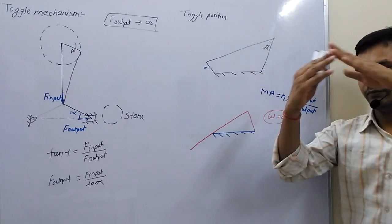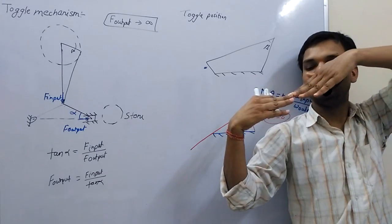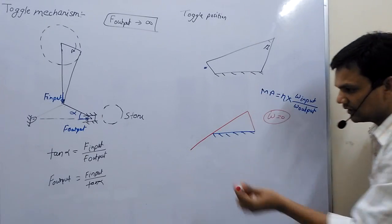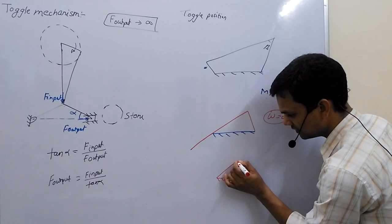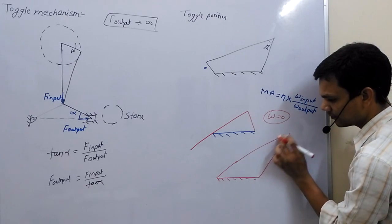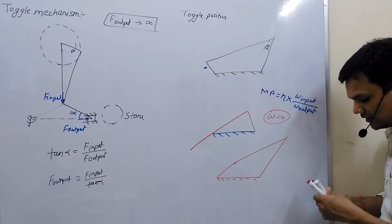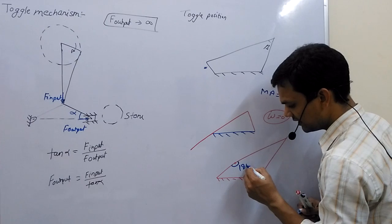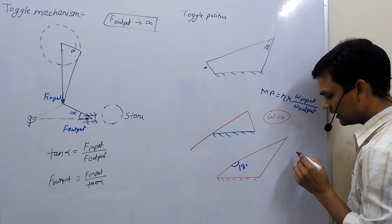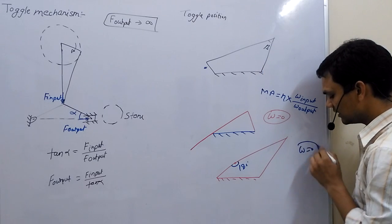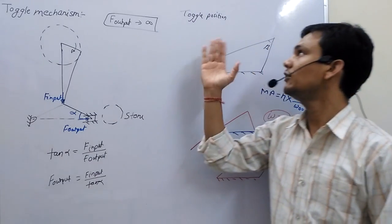Now, suppose this is our link: this angle will be zero degrees and this will be 180 degrees. On another position, this angle will be 180 degrees — suppose this is the input link and this is the coupler. Here you can see this angle is 180 degrees. At these two positions, this is the outermost position of the output link; here also omega equals zero and mechanical advantage tends to infinity. So this is our Toggle Mechanism and Toggle Position.